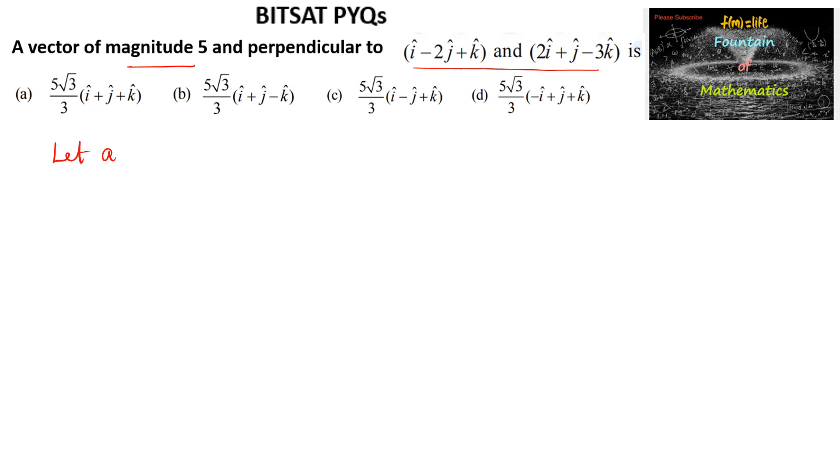Let us consider vector a is equal to i-2j plus k and vector b is equal to 2i plus j minus 3k.